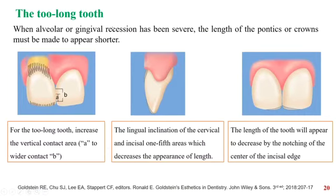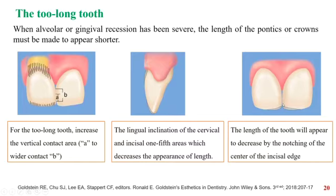In cases when the tooth is too long — which happens when there is alveolar or gingival recession — the length of the crown should be made to appear shorter. For this, we increase the vertical contact area from A to B to give an appearance of decreased length. Also, the incisal third and the cervical third can be given a lingual inclination, and we can decrease the apparent length by notching the center of the incisal edge. When it is not possible to create an illusion of shorter length, gingival-toned ceramics can be used in the cervical third area to mask the length.